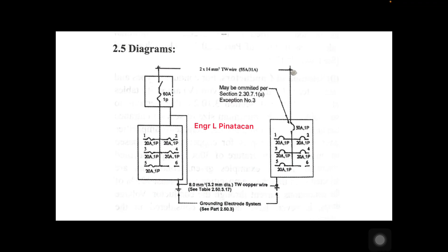The grounding wire is 8 mm² TW copper wire, verified per table 2.50.3.17. For the grounding electrode, we refer to part 2.50.3 of the Philippine Electrical Code. This is the standard for designing a small dwelling unit with not more than 6 circuits.